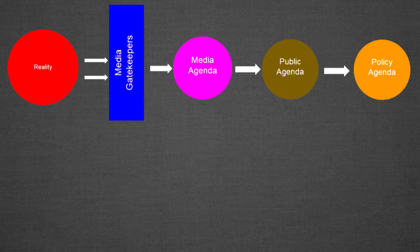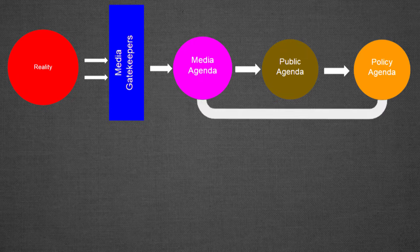The policy agenda involves the government — politicians trying to figure out what the voters want, putting laws in place that they think will be popular and help them get reelected. There is a cycle that happens here: from the policy agenda, this will then go back and influence the media agenda, because policy creates news stories that the media will cover. And the media agenda can also influence policy agenda, back and forth.